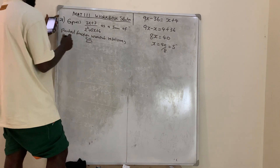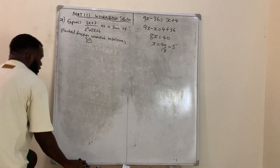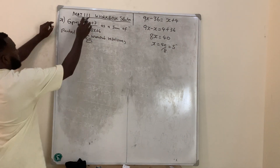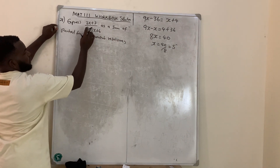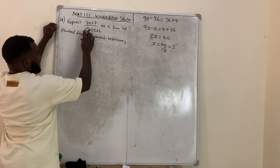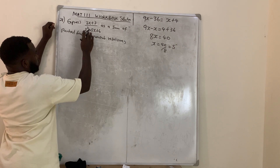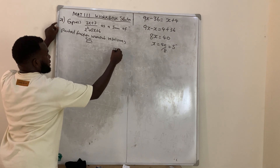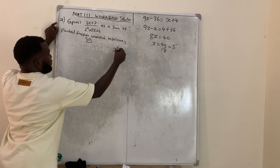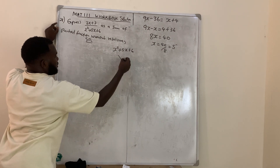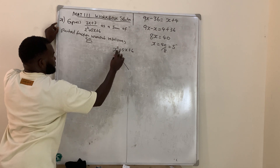Solution. First of all, we need to break this down because it is just one single fraction. For partial fractions, the denominator must be more than one. So if I have x² + 5x + 6, I want to use the method of factorization.